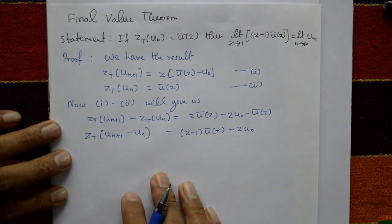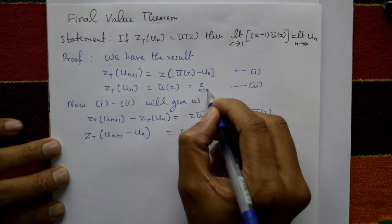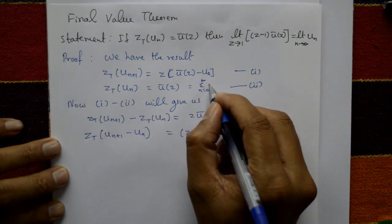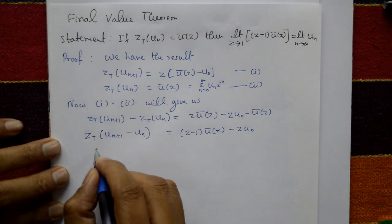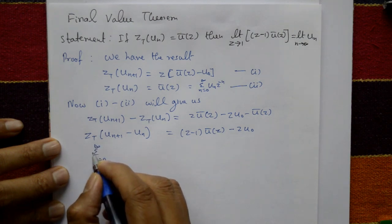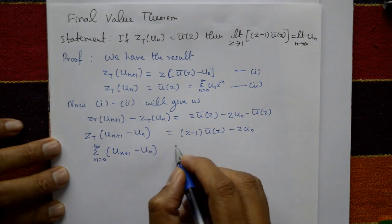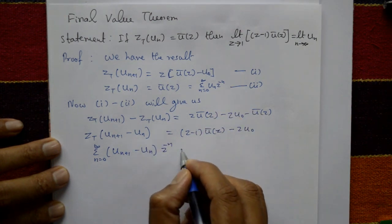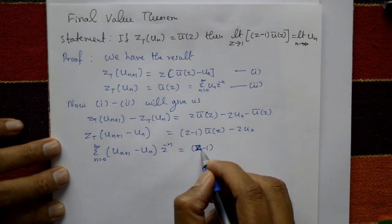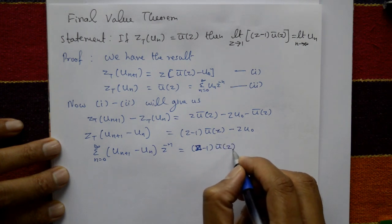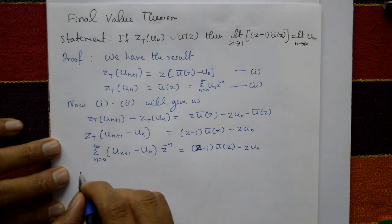Using the definition, ū(z) equals the summation from n equals zero to infinity of u[n]·z^(-n). So the Z-transform of (u[n+1] minus u[n]) equals the summation from n equals zero to infinity of (u[n+1] minus u[n])·z^(-n), which equals (z minus 1)·ū(z) minus z·u₀.